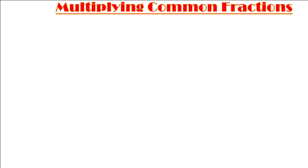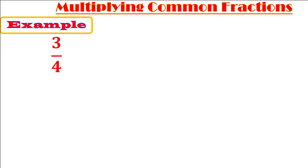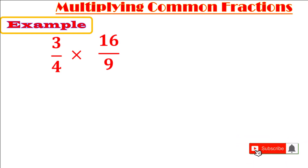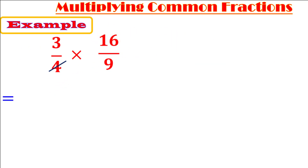Let's start multiplying common fractions. Example: 3 over 4 times 16 over 9. The first step is to cancel out the common factors between numerators and denominators. 4 and 16 have a common factor of 4: divided by 4 equals 1, divided by 4 equals 4. By the same way, 3 and 9 have a common factor of 3: divided by 3 equals 1, divided by 3 equals 3.